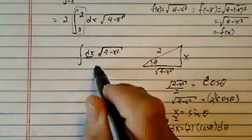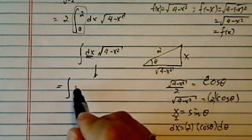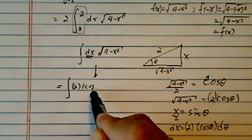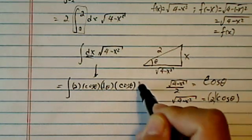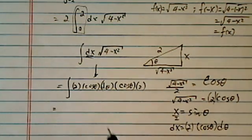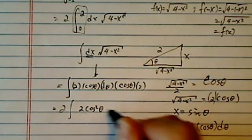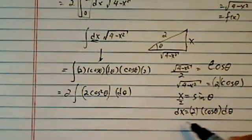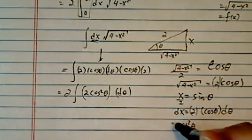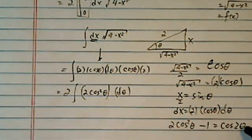So now I'm going to substitute it back into over here. Here I have dx becomes twice cosine theta d theta. And that radical root itself becomes cosine theta times 2. I have twice. The reason I'm going to leave one of them in there, because in a minute you'll see when I do the substitution for cosine theta squared, it's useful to actually have one, because twice cosine theta squared minus 1 is equal to cosine 2 theta.